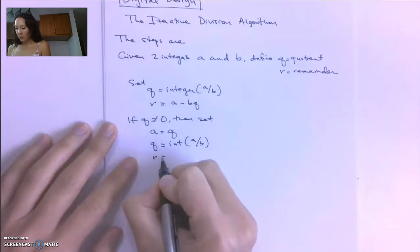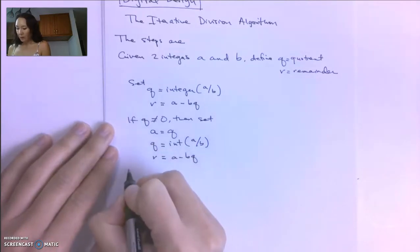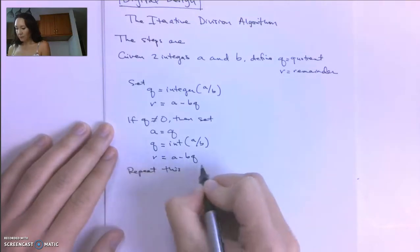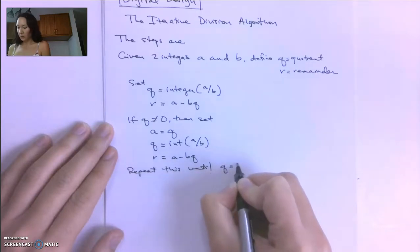And then, again, we're going to set R equal to A minus BQ. And we're going to repeat this until Q is equal to 0.